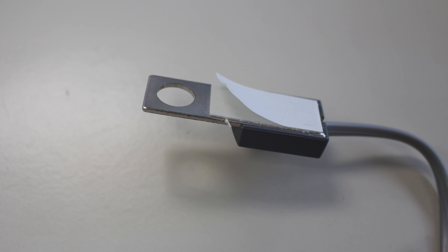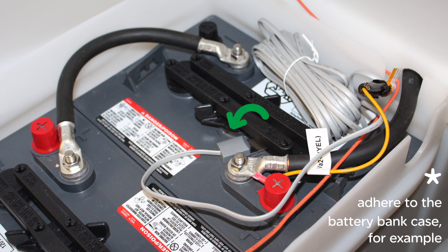Install the battery temperature sensor by peeling the adhesive off the sensor plate and sticking the sensor to the case in a location that will provide average battery bank temperature.